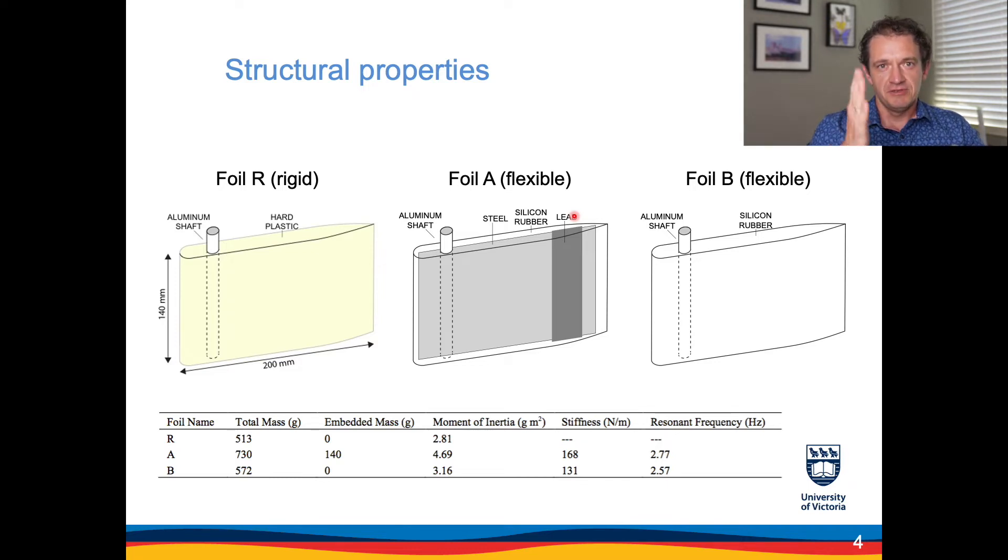The rigid foil has a steel plate along the length of the foil as well as the lead weight embedded towards the trailing edge which increases its inertia. The foil B is made of silicon rubber. It's completely flexible relative to the other two.